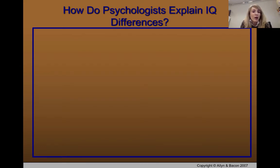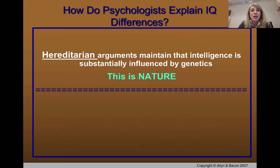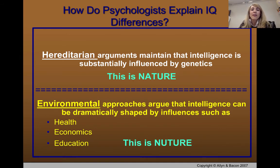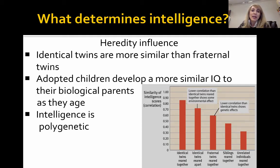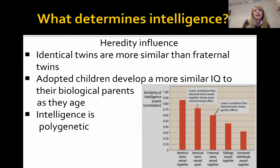People differ in their IQ scores — so how do we explain this? Is it heredity (nature) or environment (nurture)? As with everything in psychology, there's evidence on both sides, and ultimately it's a combination of both. For the heredity argument, researchers compare identical twins versus fraternal twins, and adopted siblings versus non-adopted siblings. They find that identical twins are more similar in IQ than fraternal twins, suggesting genetics matters since identical twins share the same genetics but grow up in the same environment.